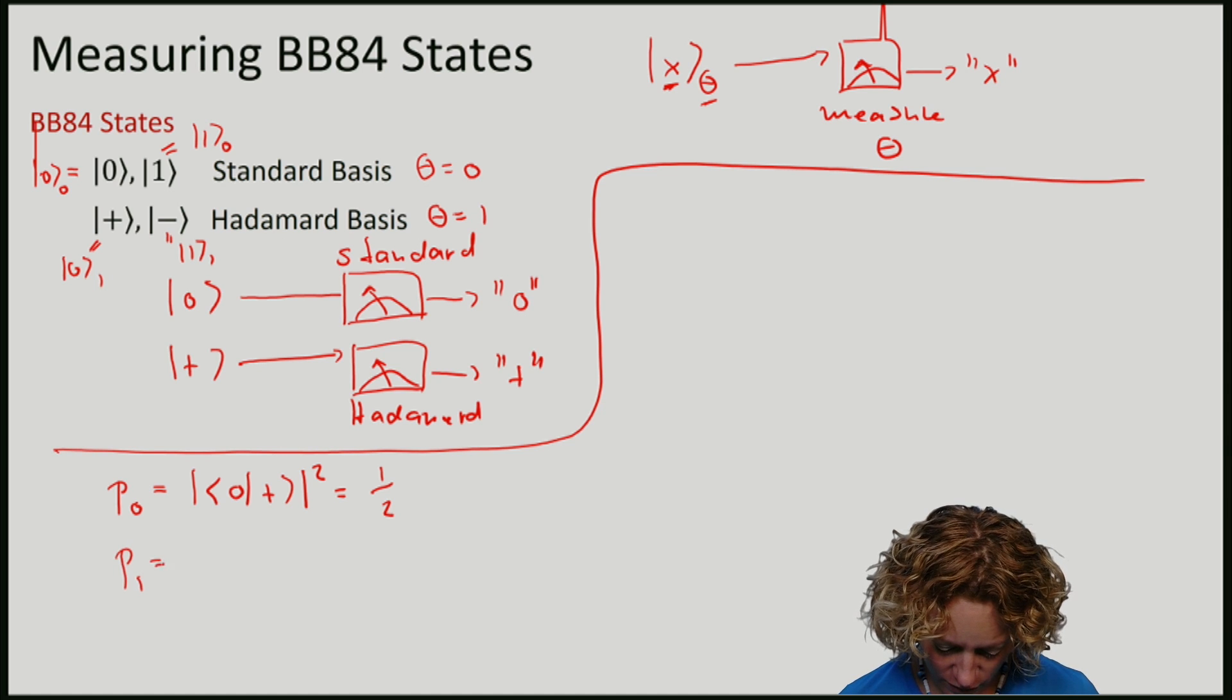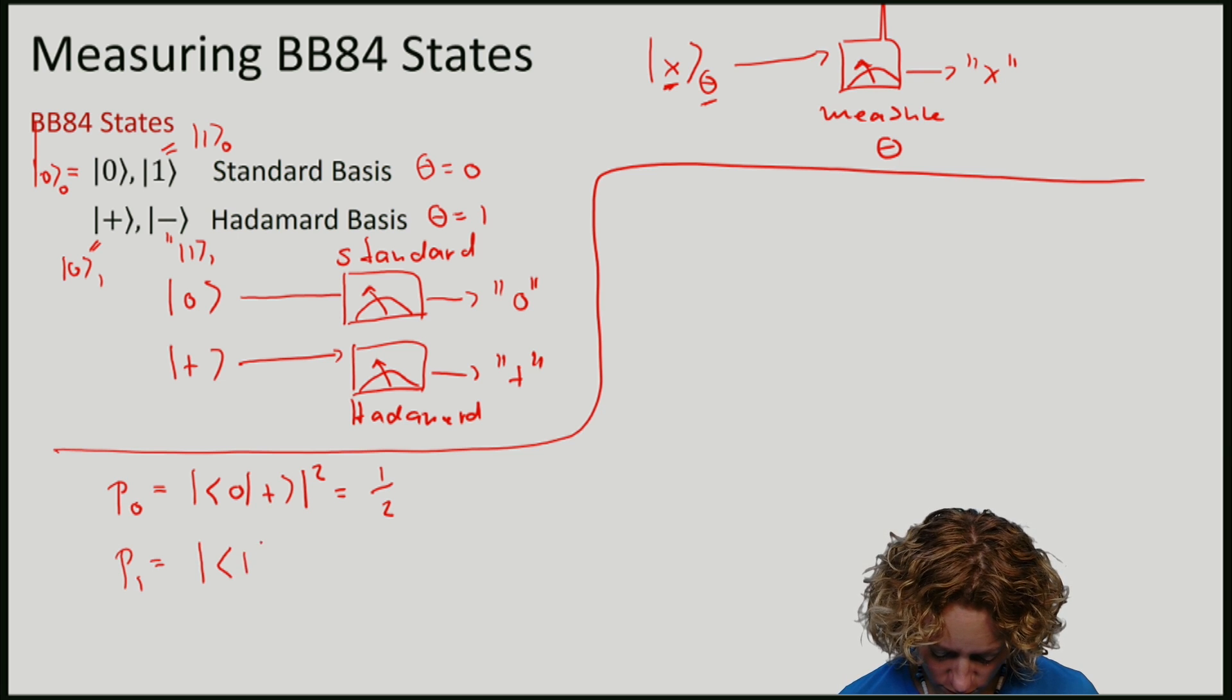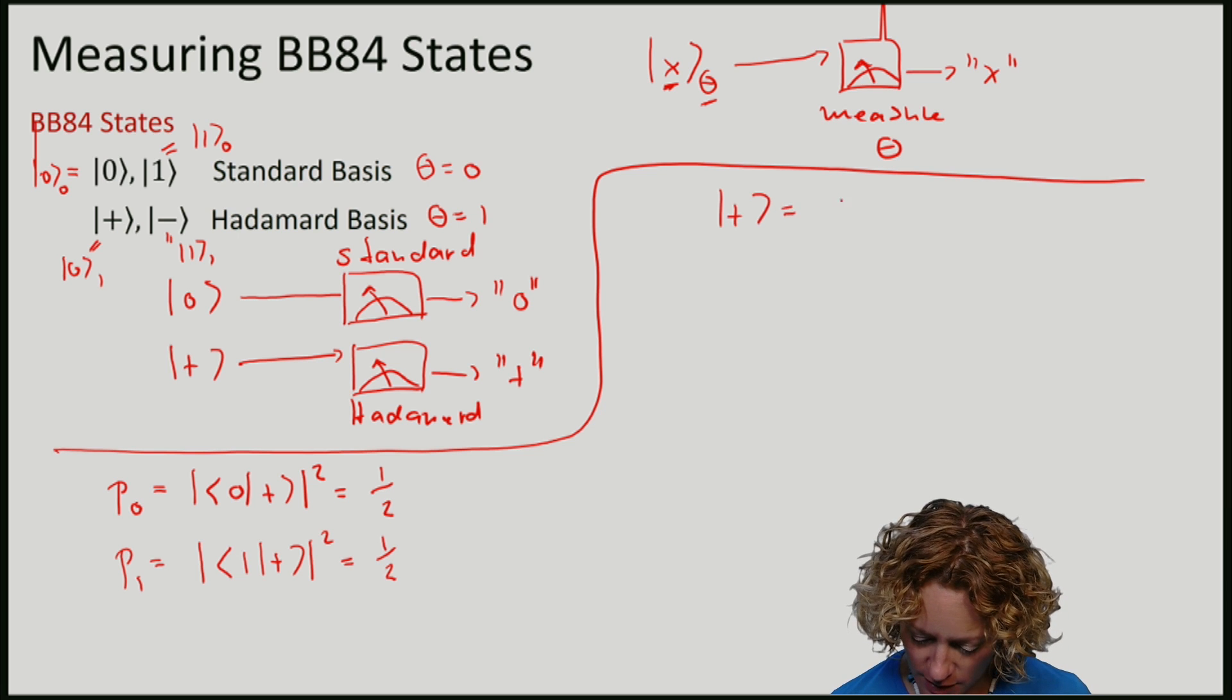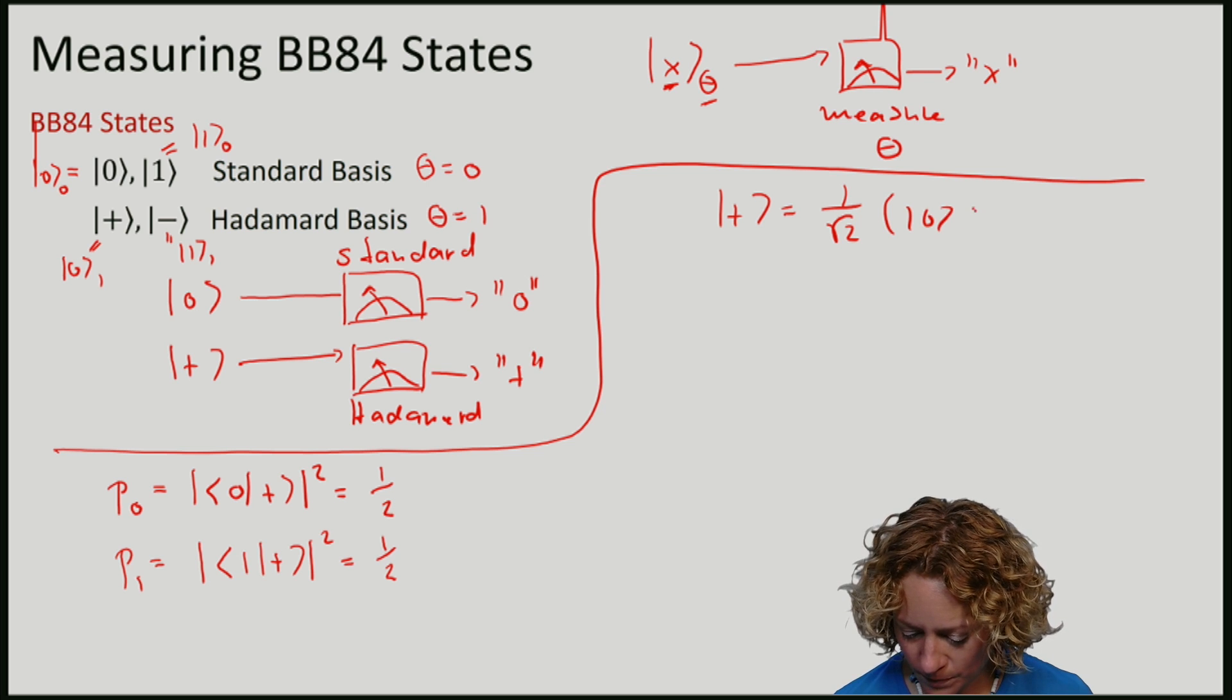Similarly, computing the probability for outcome one also gives one half. This comes from the fact that plus is the equal superposition between zero and one.